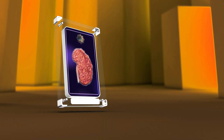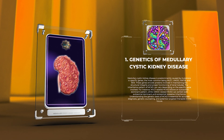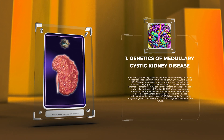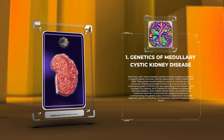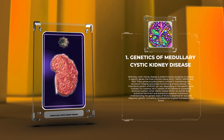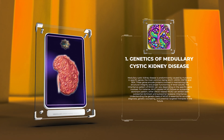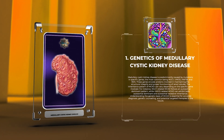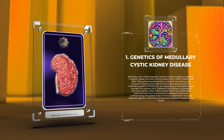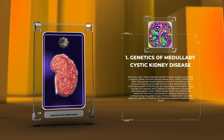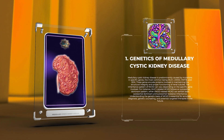Medullary Cystic Kidney Disease is predominantly caused by mutations in specific genes, the most common being MUK1, AMOD, HNF1B, and REN. These genes encode proteins involved in maintaining the structural integrity and proper functioning of renal tubules. The inheritance pattern of MCKD can vary depending on the specific gene involved. For instance, MUK1-related MCKD follows an autosomal dominant pattern, while AMOD-related MCKD can exhibit both autosomal dominant and autosomal recessive inheritance.